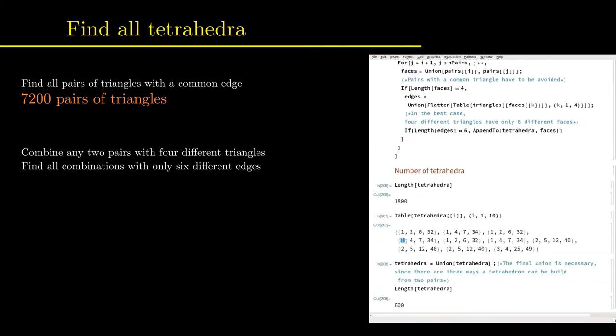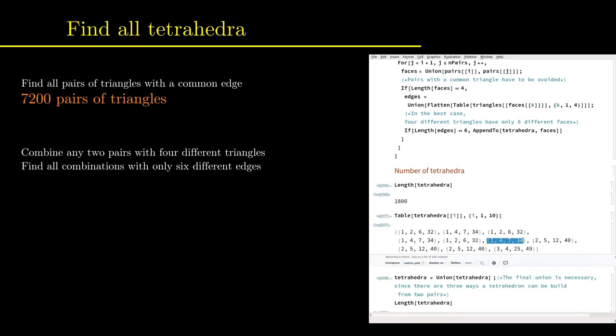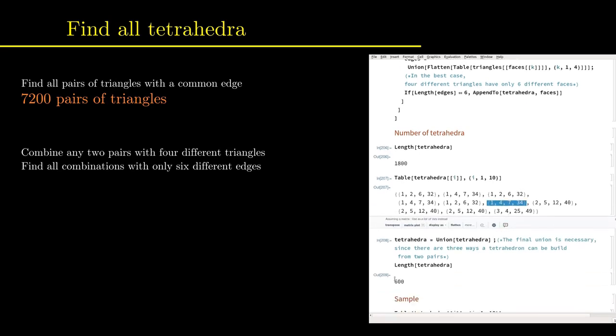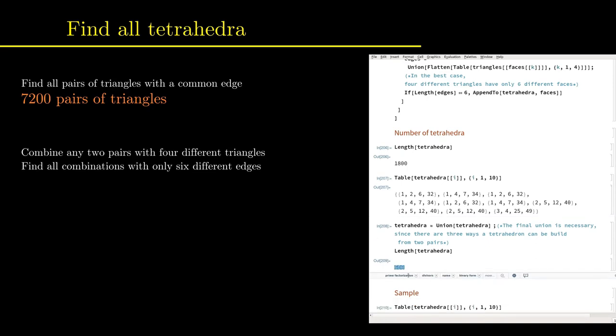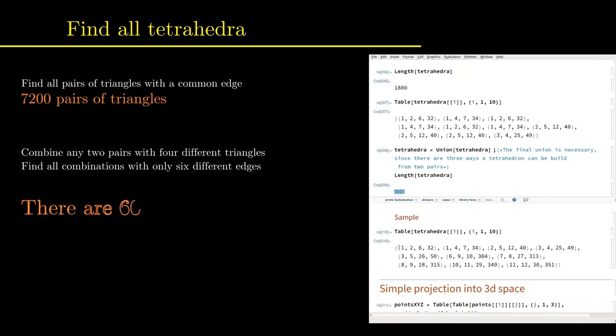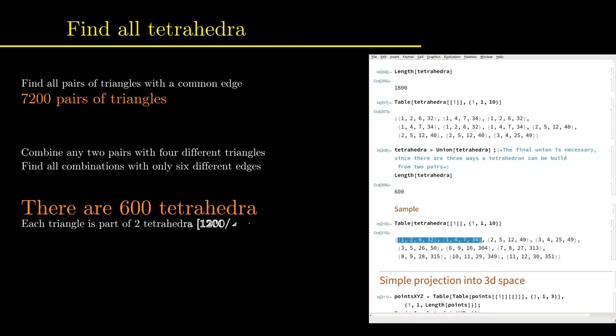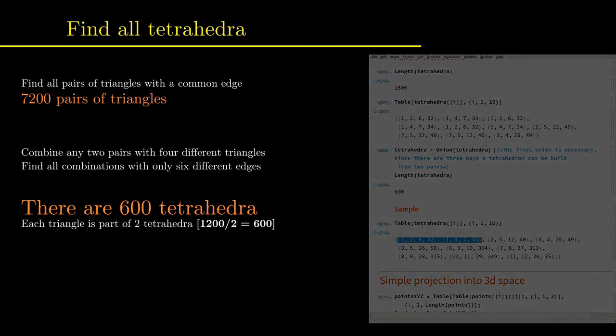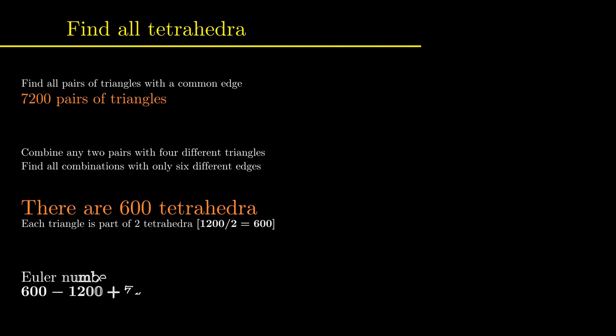A short inspection shows that always three of the tetrahedra are equal, because there are three different possibilities to build a single tetrahedron from two pairs of triangles. Once the equal tetrahedra are removed from the list, we end up with 600 tetrahedra, and each triangle is part of two tetrahedra. The four-dimensional Euler number analog is zero, which shows that the object has the same topology as a hypersphere, which is no big surprise, of course. By now, everyone should be convinced that this set of 120 points is more than just a collection of points.